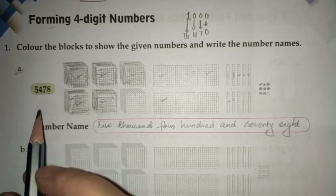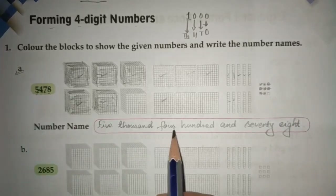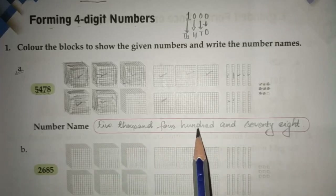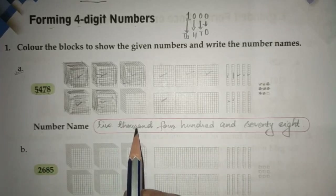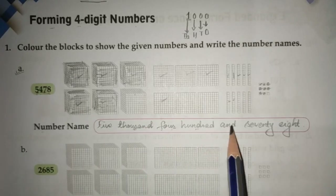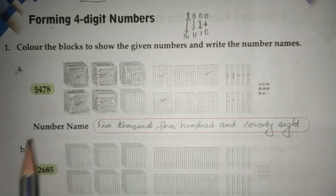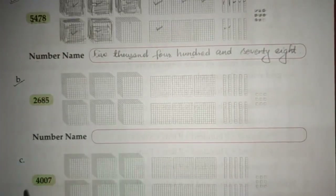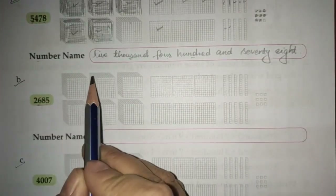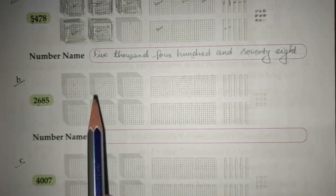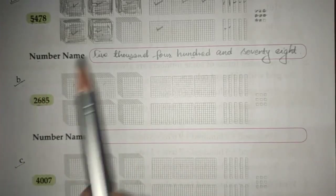I am writing the number name: five thousand four hundred and seventy-eight. Please make sure you know the spelling of 'thousand' and 'hundred' — if you have forgotten, please learn them. There are two more sums, 1b and 1c. In the same manner, look at the numerals, color the blocks, and then write the number name.